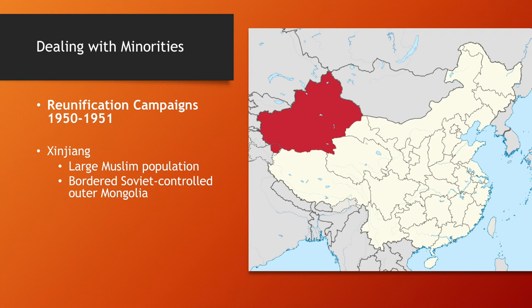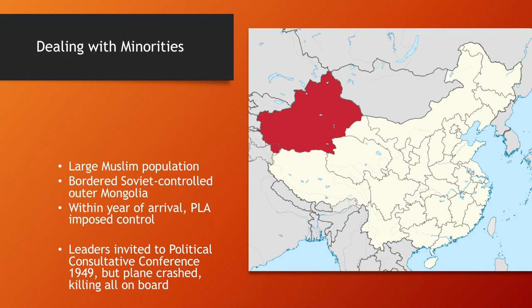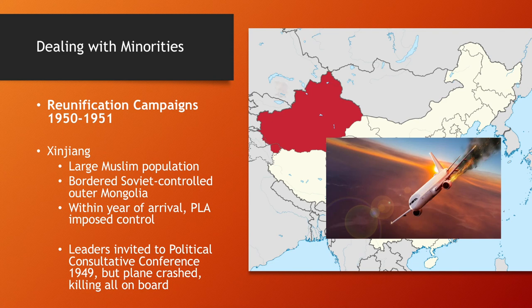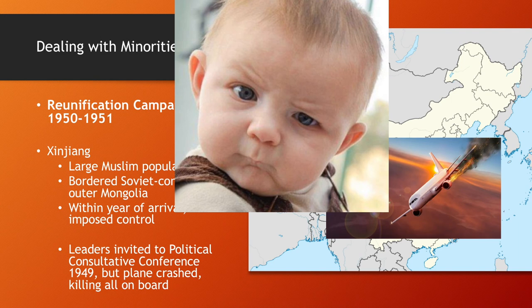The PLA was dispatched and imposed control. Interestingly, the Xinjiang leaders were invited to a political consultative conference in Beijing in 1949, but their plane crashed, killing all on board. There are rumors that Mao and the communists orchestrated this plane crash, but there is no concrete evidence to support that. Nevertheless, this plane crash removed the opposition from Xinjiang, as they were all dead.